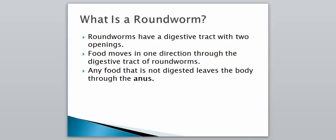To review: roundworms have a digestive tract with two openings, and food will move in one direction through the digestive tract. It goes in through the mouth, follows the same path, and leaves the body through the anus — any food that is not digested exits through the anus. The defining characteristics are that they're unsegmented, they have two digestive tract openings, and they have a pseudocoelom. That's what sets them apart from the rest of the worms.